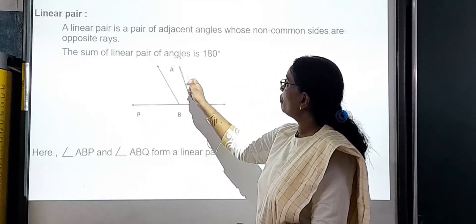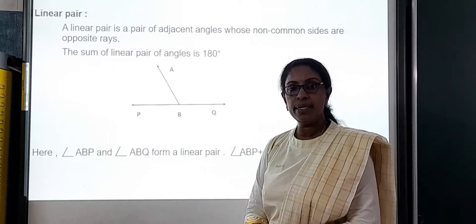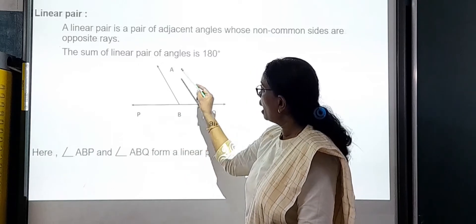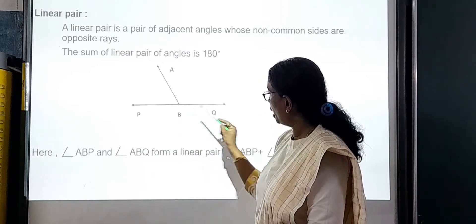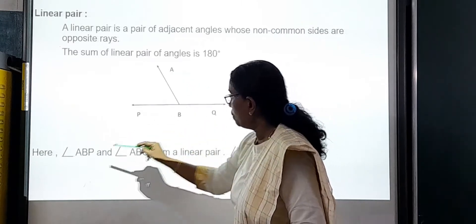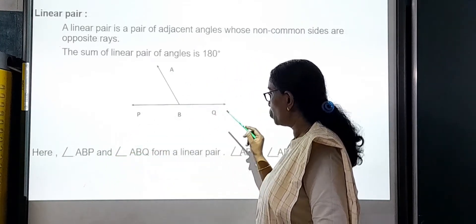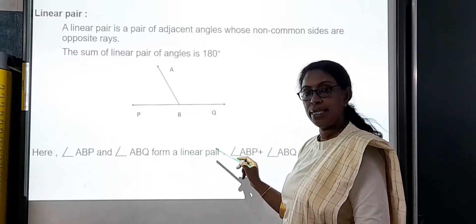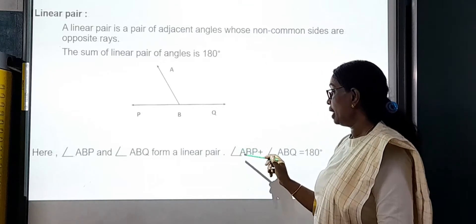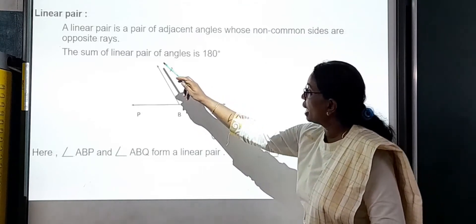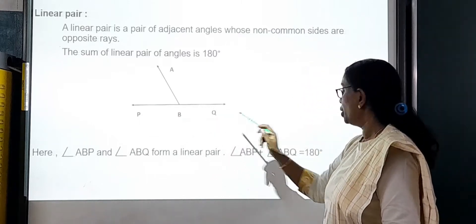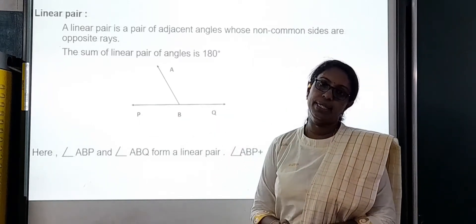For a linear pair, we need angles ABP and ABQ. The sum of the linear pair: angle ABP plus angle ABQ is equal to 180 degrees.